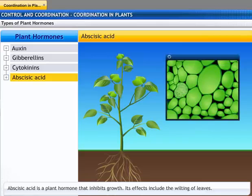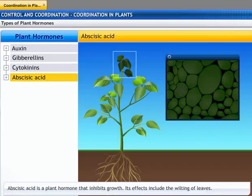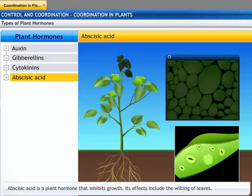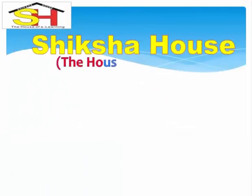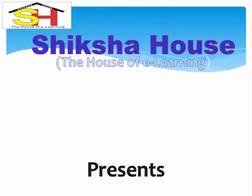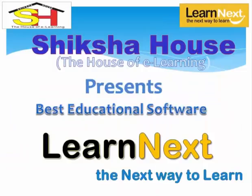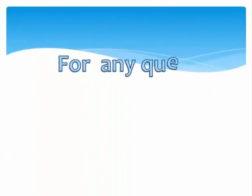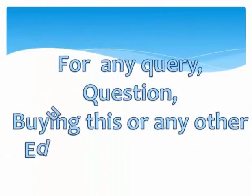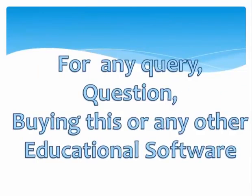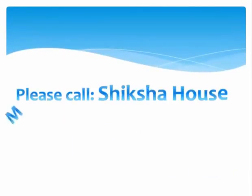Plants also need signals to stop growing, and these are provided by the hormone abscisic acid, which inhibits growth. Its effects include the wilting of leaves and promoting the closing of stomata.